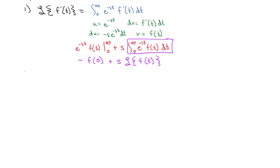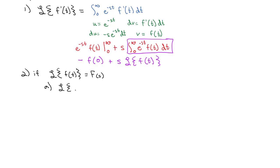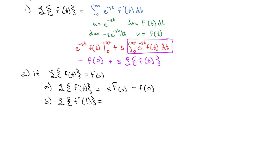If the Laplace transform of f of t is equal to capital F of s, then we have the following properties. The Laplace transform of f prime of t is equal to s times F of s, where F represents the Laplace transform, minus lowercase f of 0. And then using the same logic, the Laplace transform of f double prime of t — using integration by parts twice — gives s squared times capital F of s minus s times f of 0 minus f prime of 0.